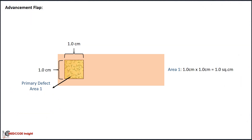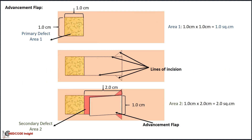Let's take an example to understand both defects and how to calculate them. Suppose a physician excises a 1×1 centimeter lesion, resulting in an excised area of 1 square centimeter — this creates the primary defect. To close it, the physician performs an adjacent tissue transfer using an advancement flap of 2 square centimeters. Additional incisions are made to create a flap that slides or advances forward from its normal location into the defect. The secondary defect results from the flap design used for reconstruction.